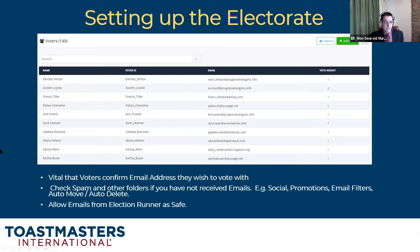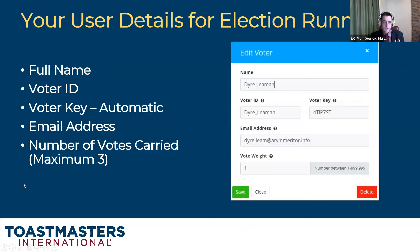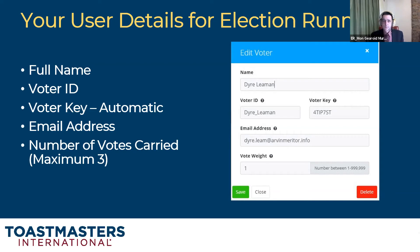We will run a test two to three days in advance of the business meeting, and also a test on the day just before the live voting. In Election Runner, if we find any error or need to add another voter at any point, that is possible. The voter ID is created by combining the first name and surname with an underscore, and Election Runner automatically generates the voter key.